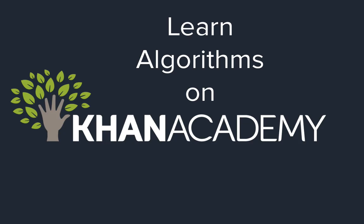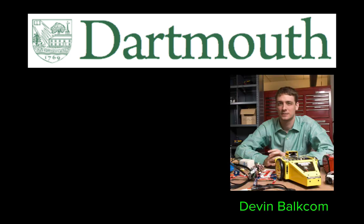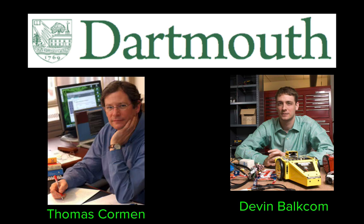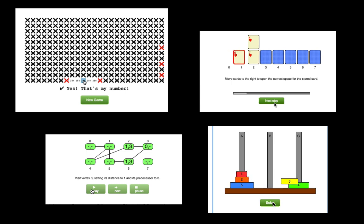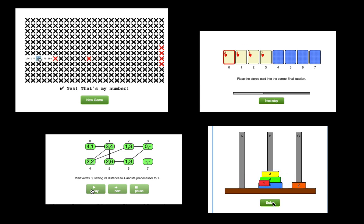You can learn about algorithms and asymptotic analysis on Khan Academy, thanks to the contribution of two Dartmouth College professors. Tom Korman is the first author of the most popular college algorithms textbook in the world, plus the author of Algorithms Unlocked. Devin Balcom designed Dartmouth's Intro CS course and researches robotics — he built the world's first origami folding robot. Tom and Devin will teach you many of the algorithms you'd learn in APCS or CS101, like searching algorithms, sorting algorithms, recursive algorithms, and graph algorithms. There will be tons of interactive visualizations, quizzes, and coding challenges to help you understand better along your learning journey.